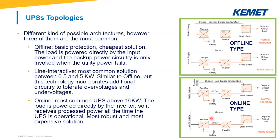There are hundreds of different architectures on the market. However, we can say that three of them are the most common. The first one is the offline topology. It gives basic protections and is the cheapest solution. The load is powered by the input power and the backup power circuitry is solely invoked when utility power fails. As you can see in the scheme on the right, during normal operation the switch is up, meaning power comes from the mains. The UPS is not invoked at all — it's just attached to mains to recharge the battery. If there is a failure in mains, the switch goes down and power comes from the inverter and the battery.